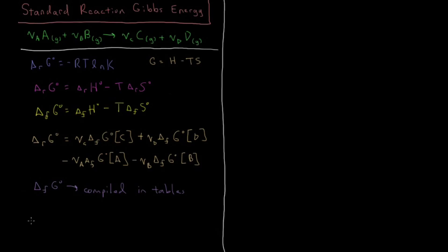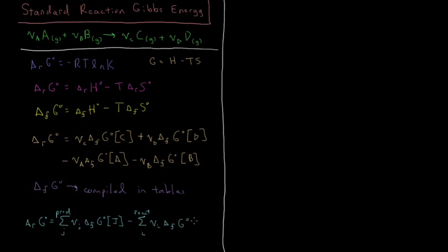More abstractly, as we did for enthalpy and entropy: delta RG naught equals the sum over products J of their stoichiometric coefficient times the standard Gibbs energy of formation of each product J, minus the sum over reactants I of each stoichiometric coefficient times the standard Gibbs energy of formation of species I. Products minus reactants — just as we've seen for enthalpy and entropy. That's the beauty of state functions: they are both additive and independent of path.